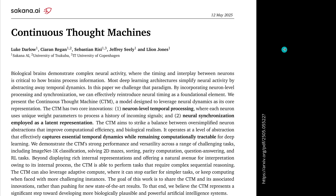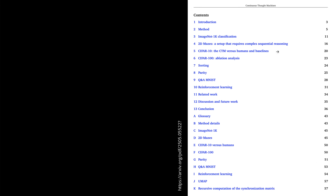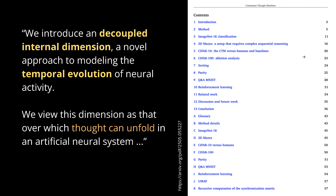This has completely new ideas about how to build AI. It's about 60 pages and really interesting. The main point is that they introduce a decoupled internal dimension — a new mathematical space, a novel approach to modeling the temporal evolution of neural network activity.